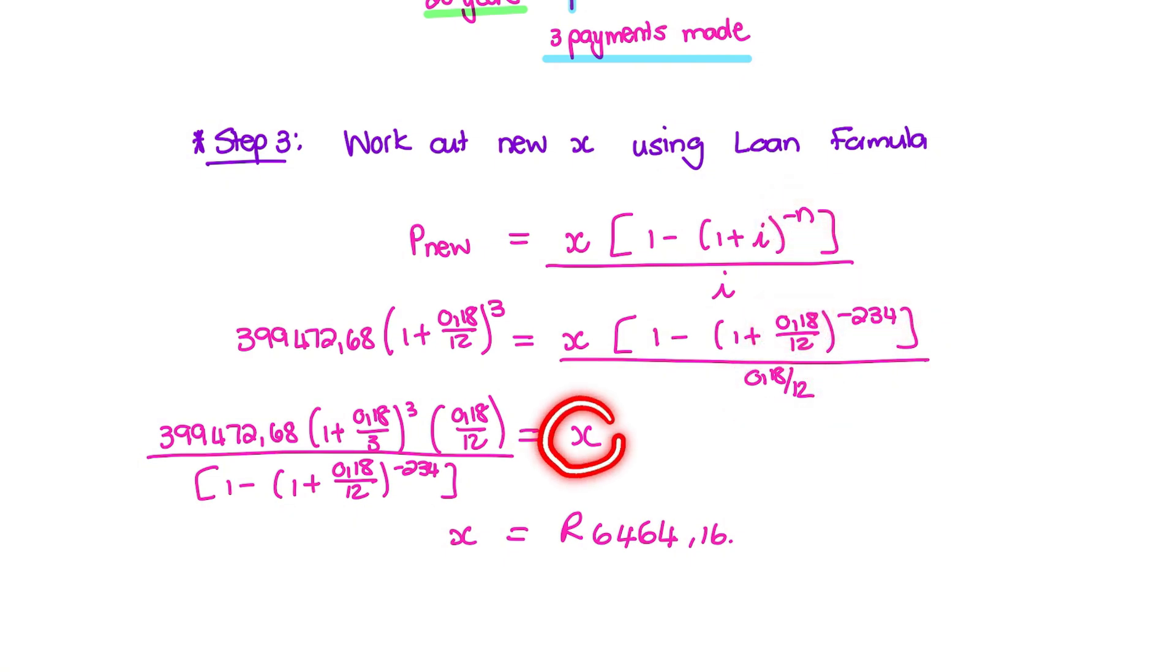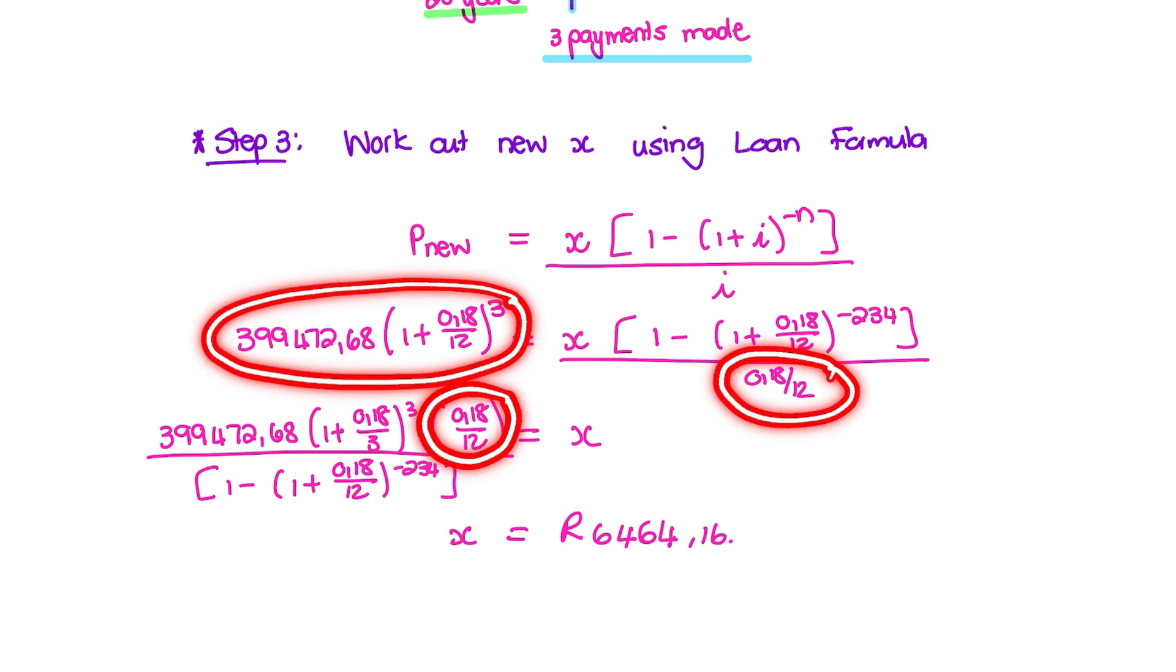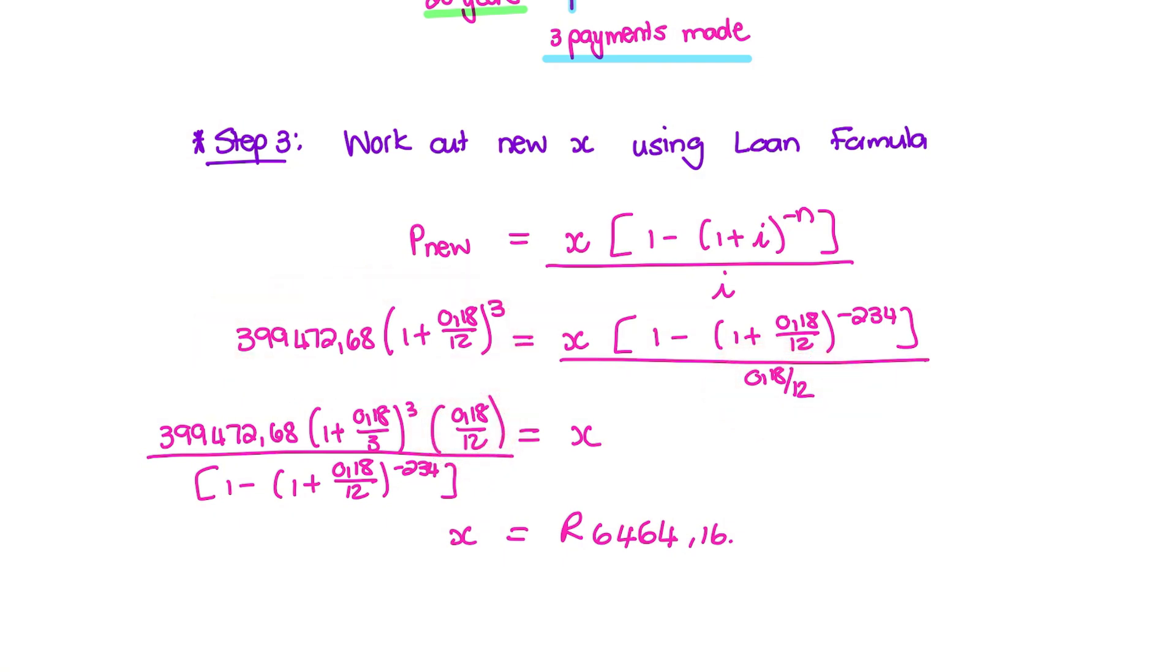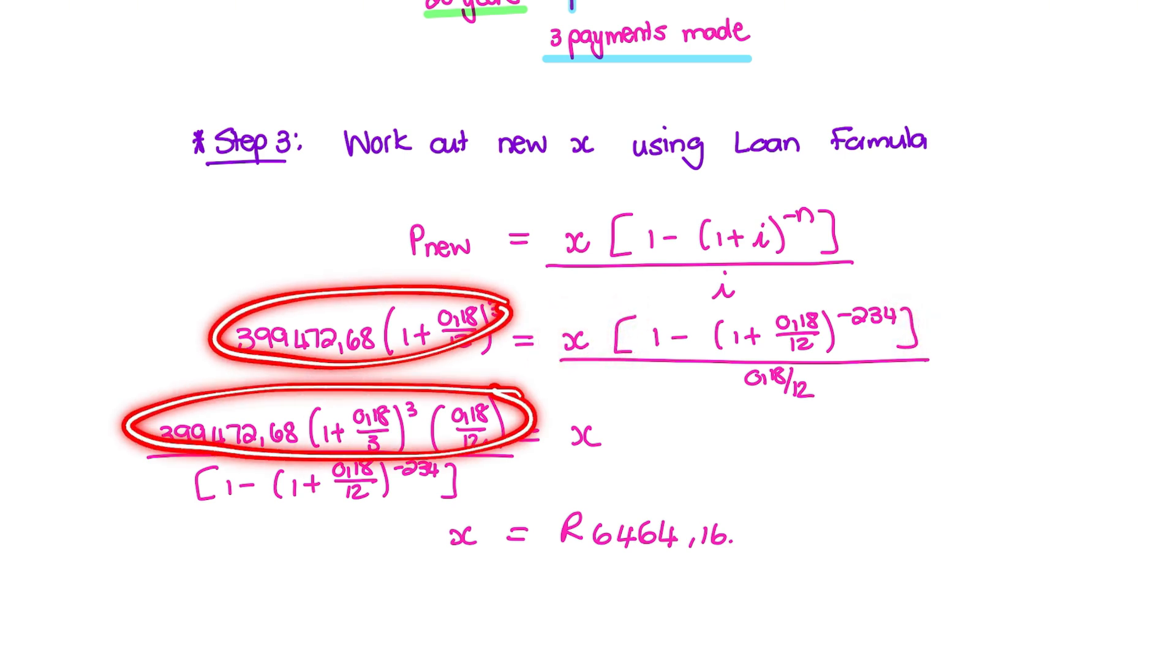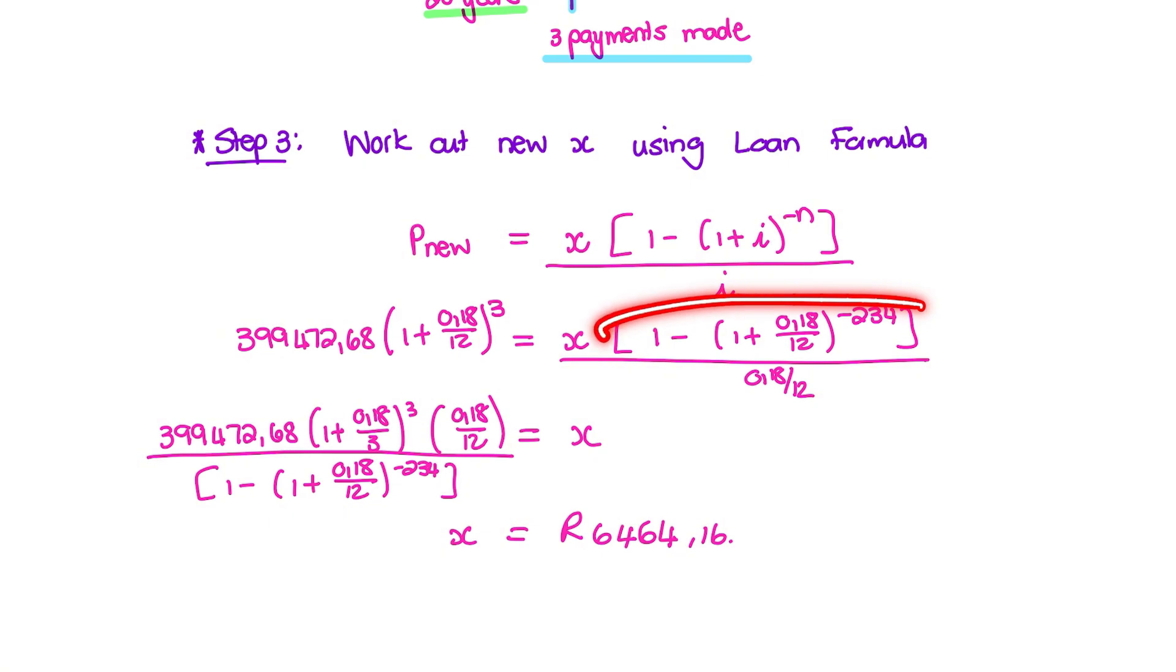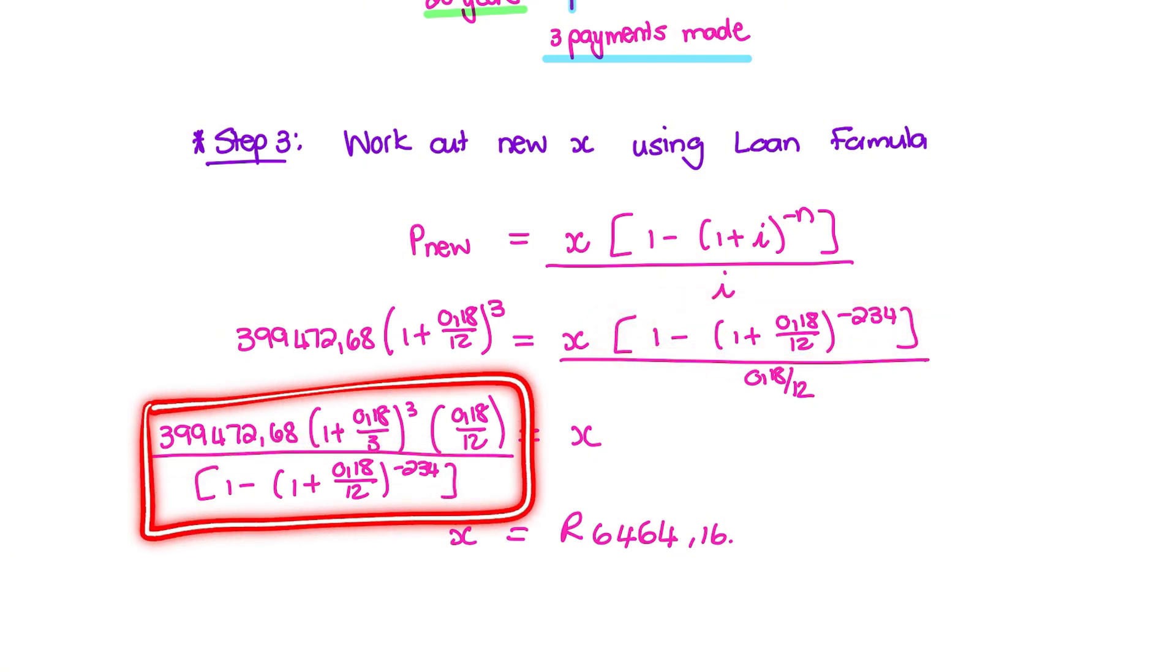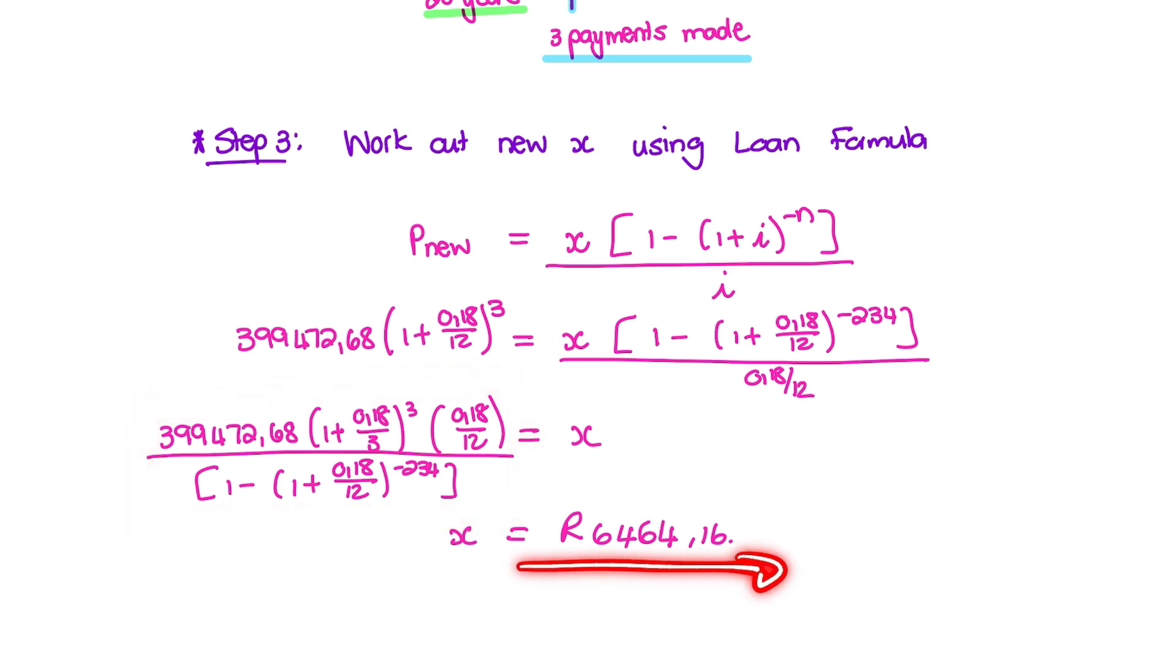Now in order to solve for X, I take this value on the left-hand side and I multiply it with the denominator of 0.18 divided by 12. And to find X alone, I will divide this new equation or expression on the left with the brackets here on the right. And what you want to do is enter these values carefully on your calculator to find that X is 6,464.16.